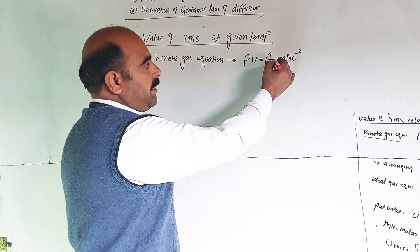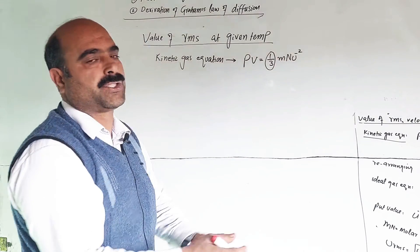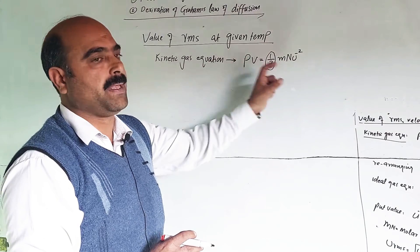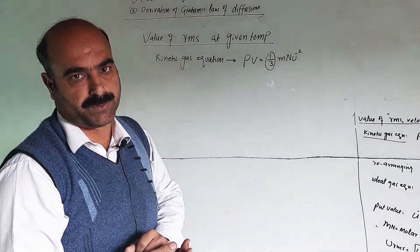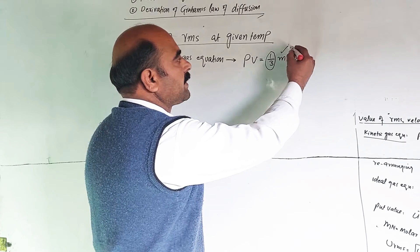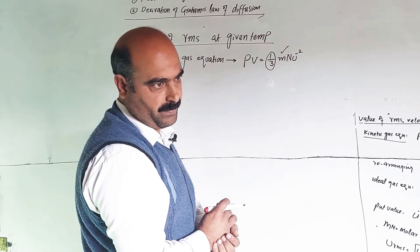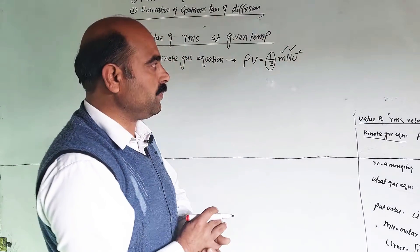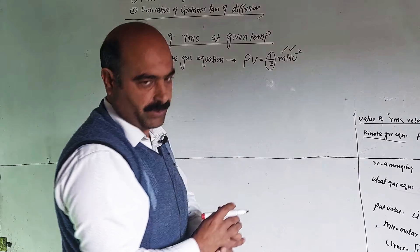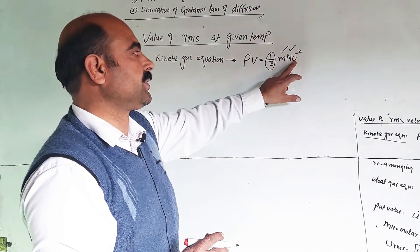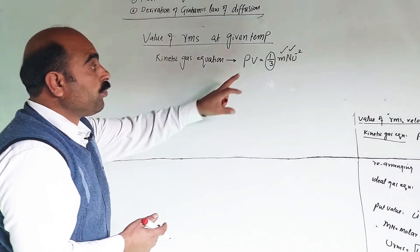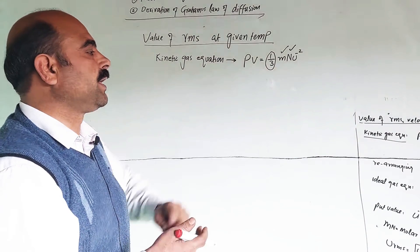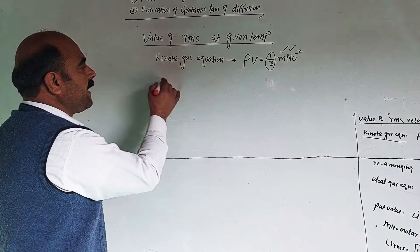In the kinetic gas equation PV = (1/3)MNu̅², P is the pressure of the gas, V is the volume, (1/3) accounts for three-dimensional molecular motion — out of three dimensions, the velocity contribution is 1/3. M is the mass of each gas molecule and N is the number of gas molecules, and u̅² is the mean square velocity.